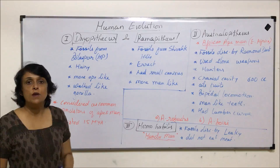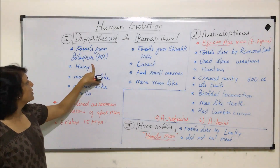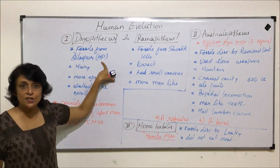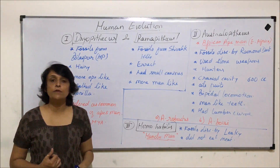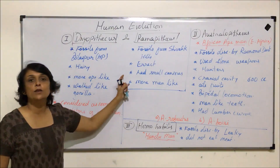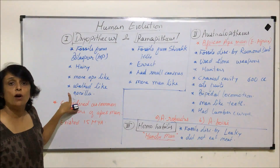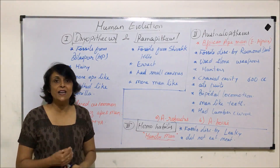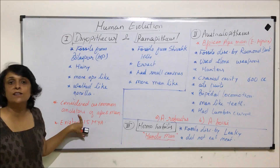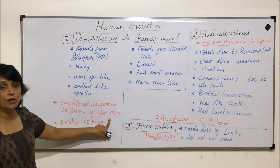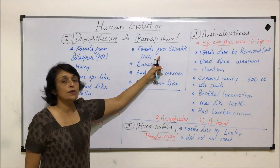The fossils of Dryopithecus were discovered from Bilaspur in Himachal Pradesh, India. The body was hairy like apes — the fur or hair was longer and stiff, not like human hair. They walked like chimpanzees or gorillas, bending forward slightly. Dryopithecus are considered the common ancestors of man and all four types of apes.